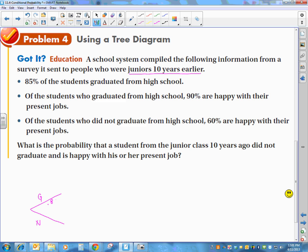And this would be 0.85 and this would be 0.15. Then it tells me, of the students who graduated from high school, 90% are happy with their present jobs. So moving along this branch of my tree, I'm going to go two different ways. And I'm going to say, part of them are happy and part of them are not happy. The happy part is 0.9. The unhappy part, of course, would be 0.1 because these two numbers will always add up to one.